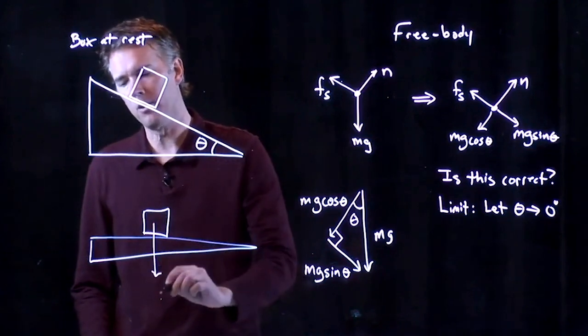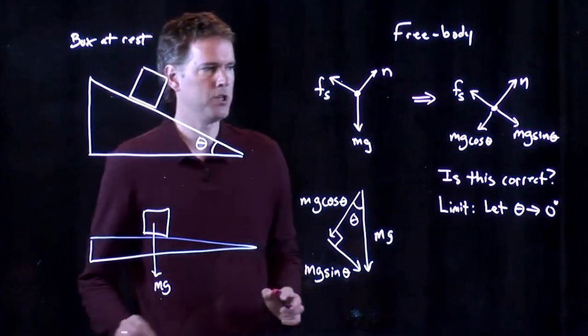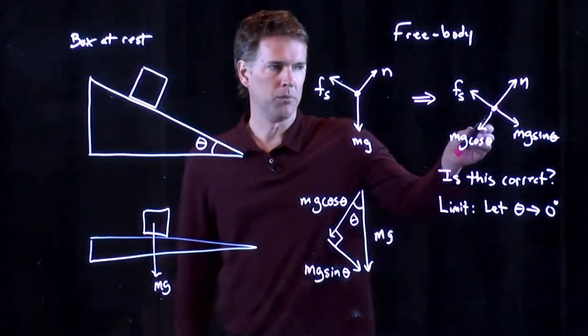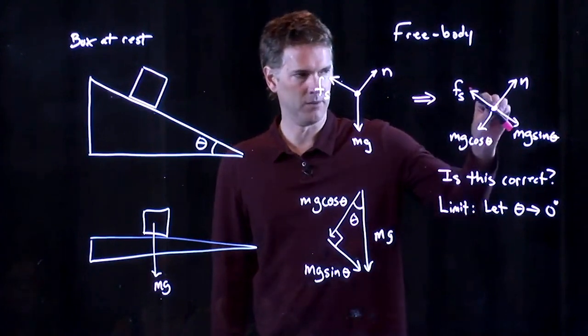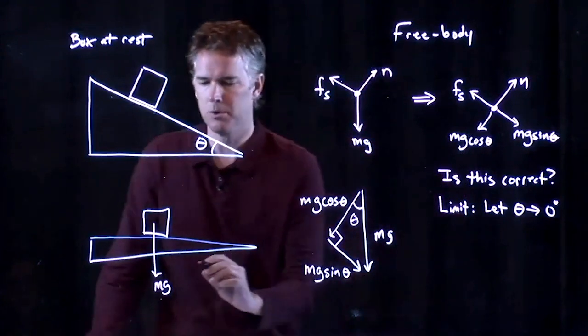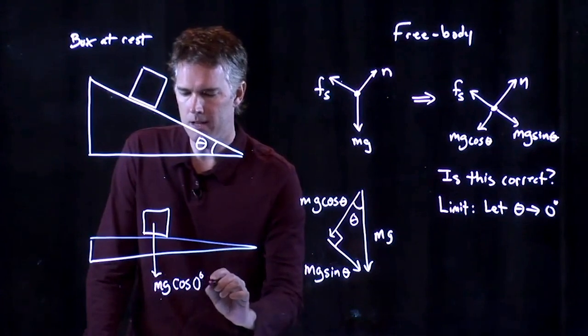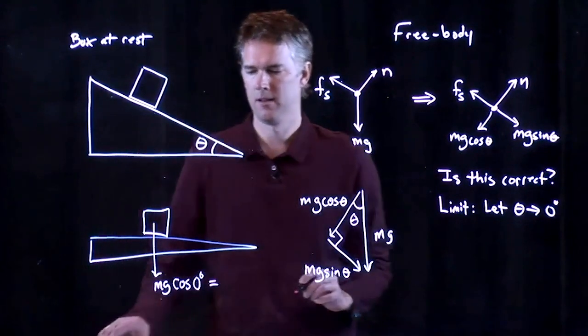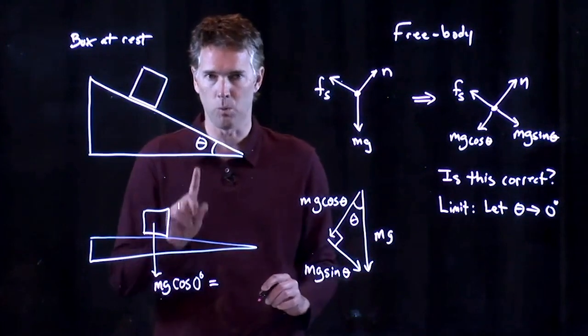If theta goes to zero degrees, that would be this condition right here. It's on a nearly horizontal surface. And therefore, the force down should be Mg. Which would be the force down? This one right here. Right? This was our surface. The whole thing is going to rotate. Mg cosine theta should go to zero. I mean, should go to Mg. Is that right? Aha! Cosine of zero is, in fact, one.